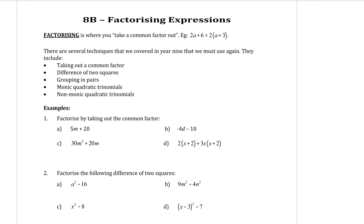Factorizing is where you take out a common factor to put something back into brackets. For example, if you have 2a plus 6, you can see that there's a common factor of 2 in both of those terms that comes out the front, and you divide each term to put the remaining things inside the brackets.